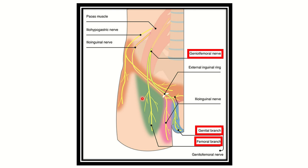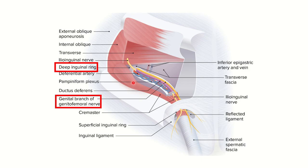The genitofemoral nerve supplies both the genital area and the femoral area. It passes through the psoas major muscle, along with the iliohypogastric and ilioinguinal nerves, which are also branches of the lumbar plexus. Here we can see the deep inguinal ring and the superficial inguinal ring.